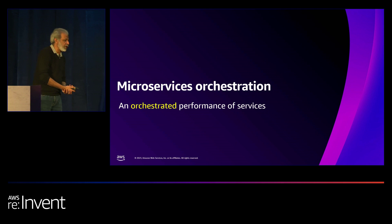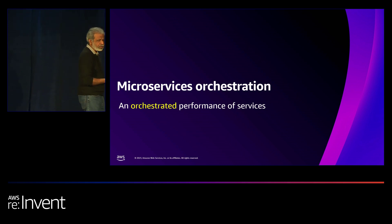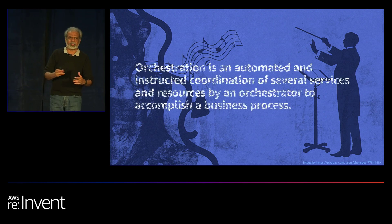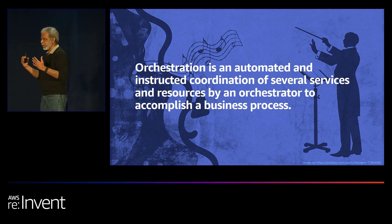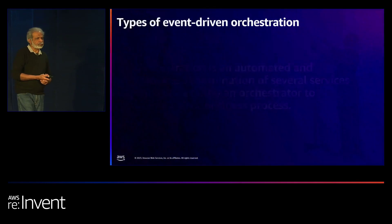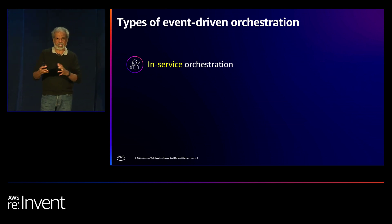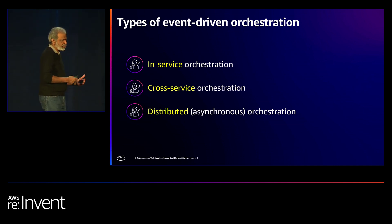Let's move on to orchestration — the twin of choreography. With orchestration, there is always a controller instructing what to do — similar to an orchestra conductor. When we say orchestration, AWS Step Functions immediately comes to mind as the state machine orchestration service. I usually talk about three types of orchestration: in-service, cross-service, and distributed. Distributed and cross-service are similar — I'll show how I differentiate them.